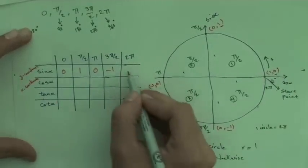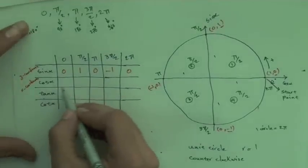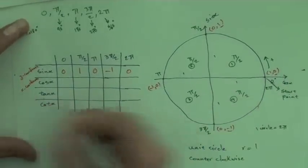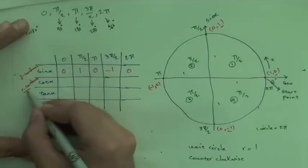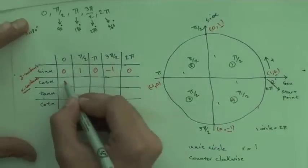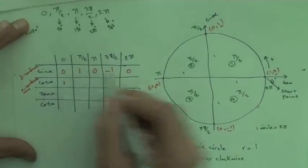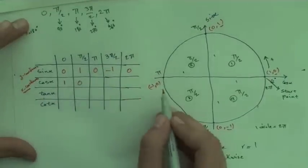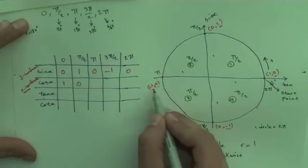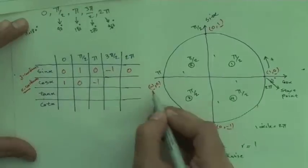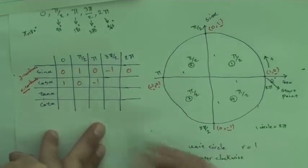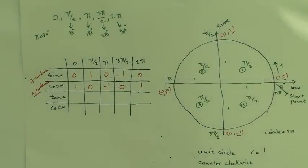For cos, we work with the x-coordinate. Cos(0): x-coordinate is 1. Cos(π/2): x-coordinate is 0. Cos(π): x-coordinate is −1. Cos(3π/2): x-coordinate is 0. Cos(2π): x-coordinate is 1 again. Sine and cosine are done.